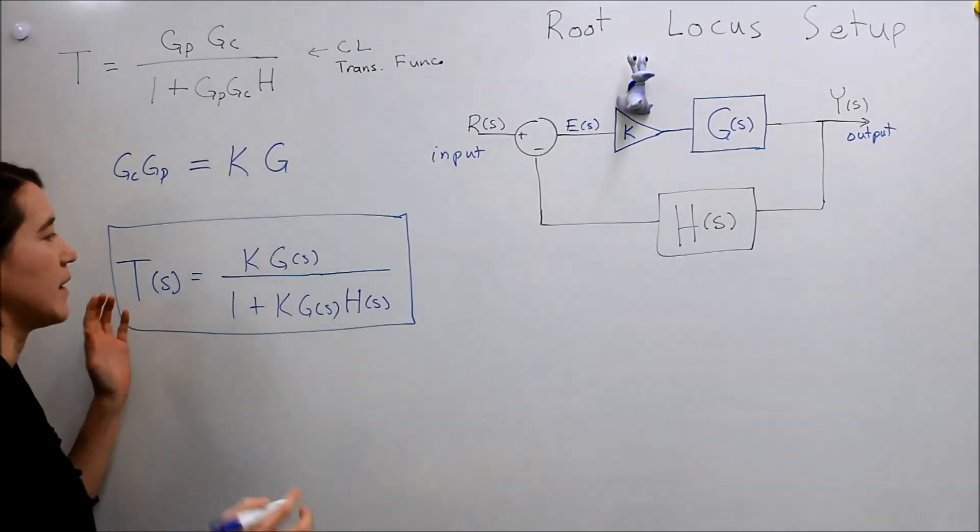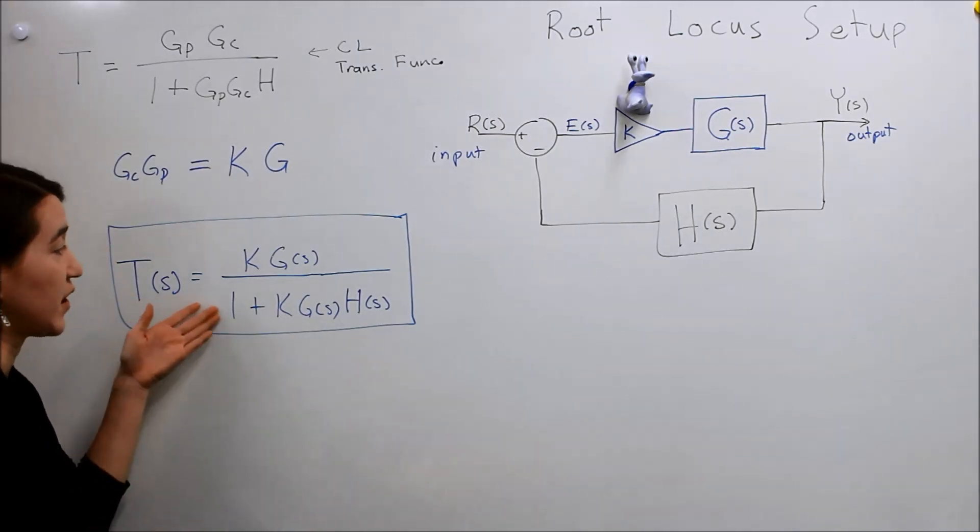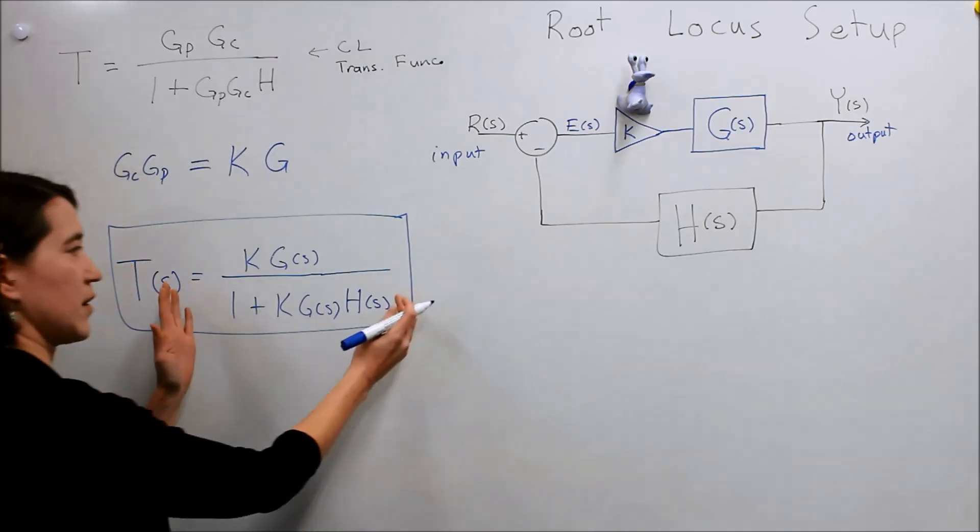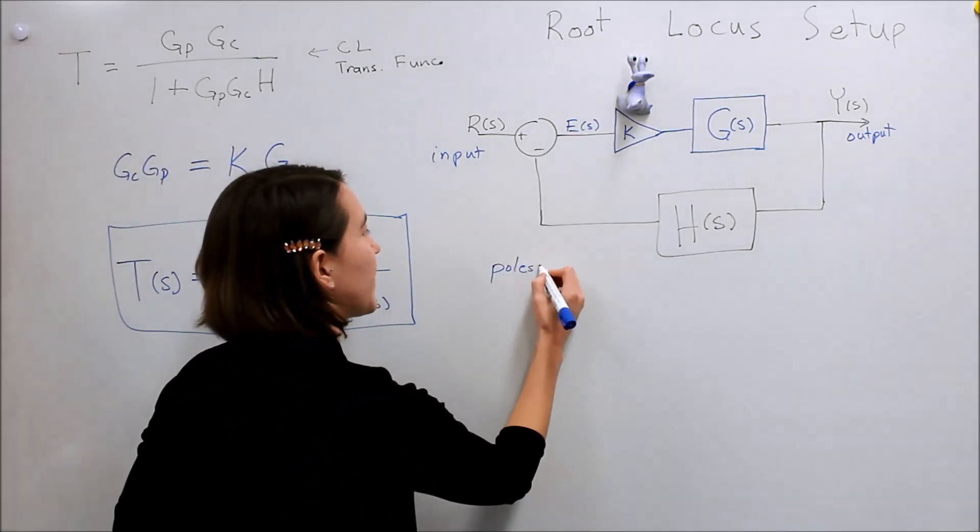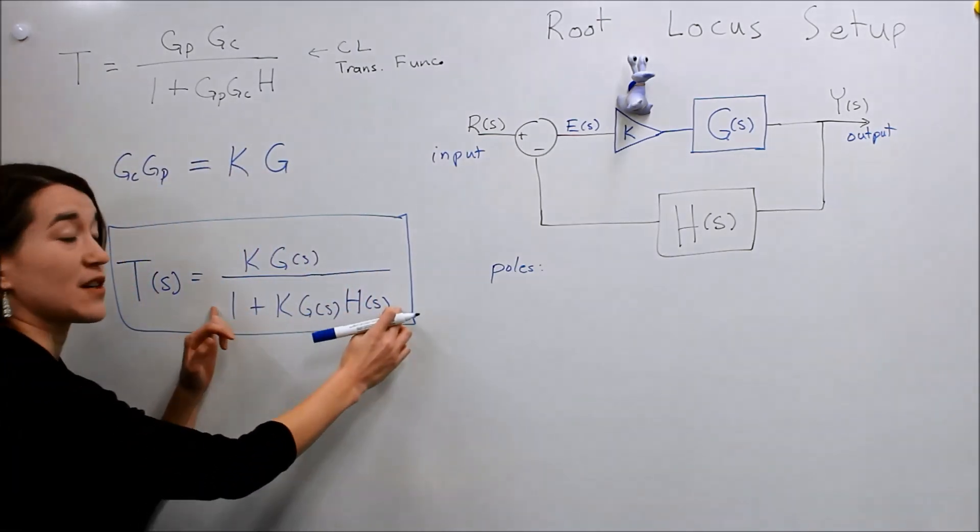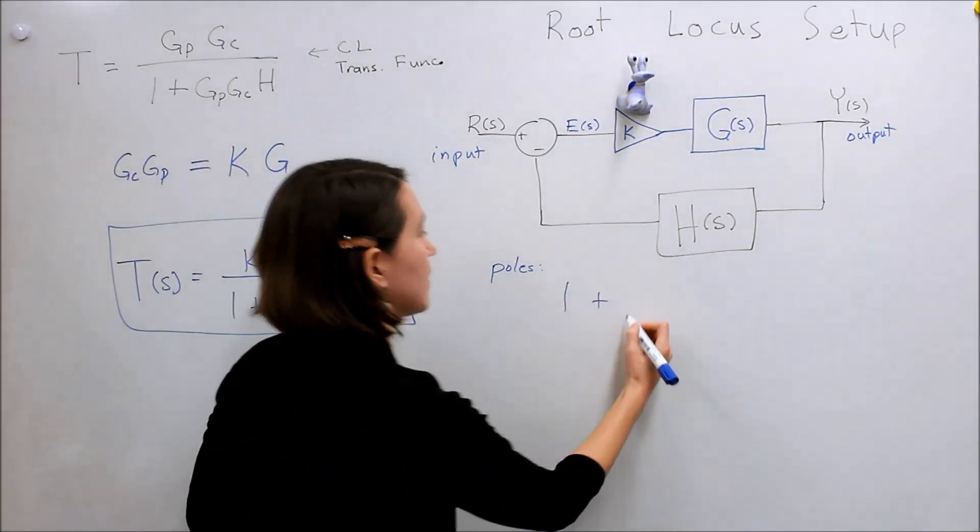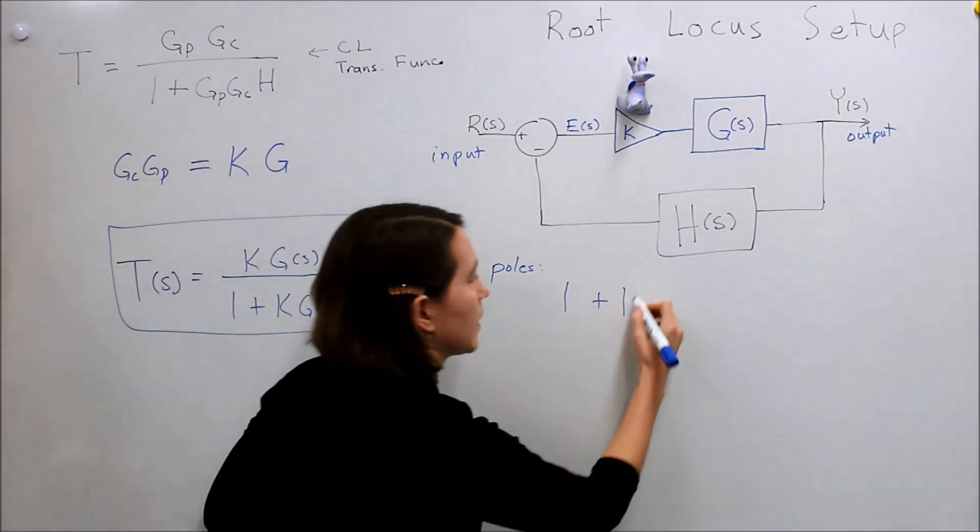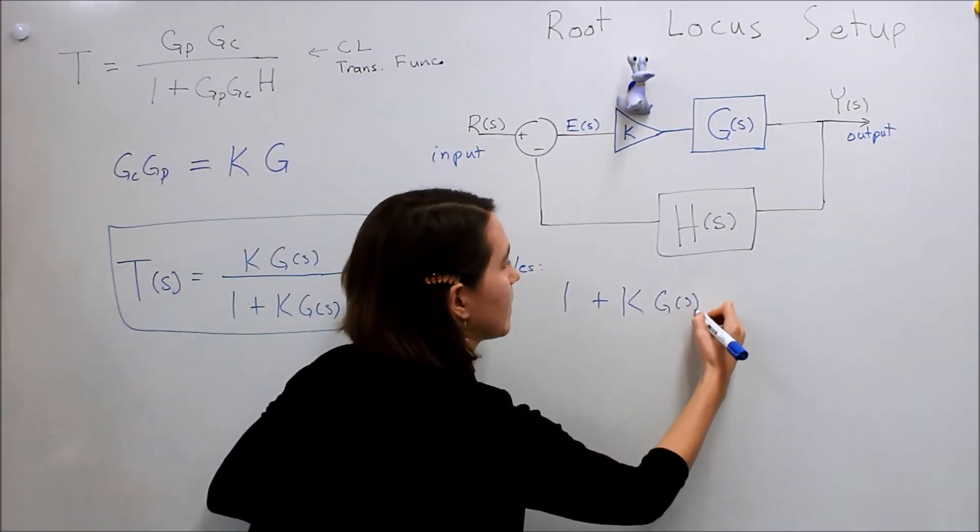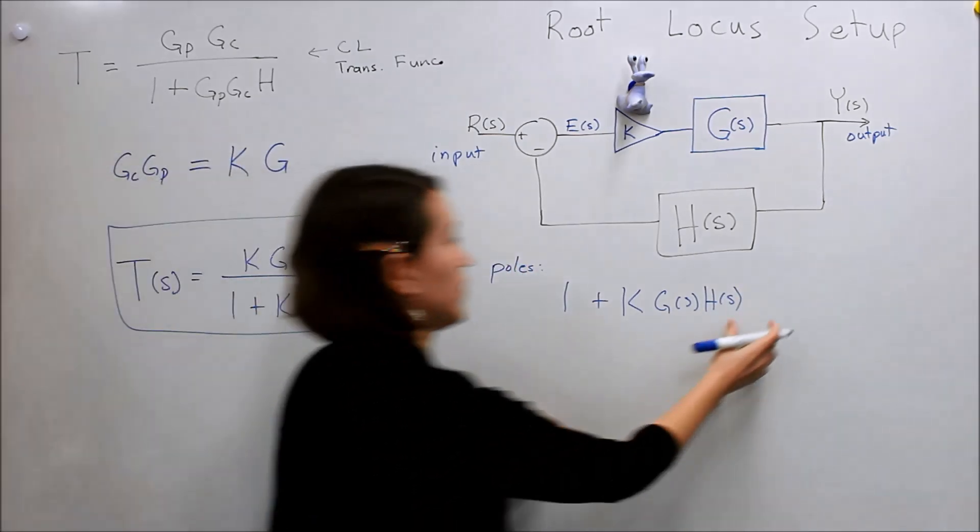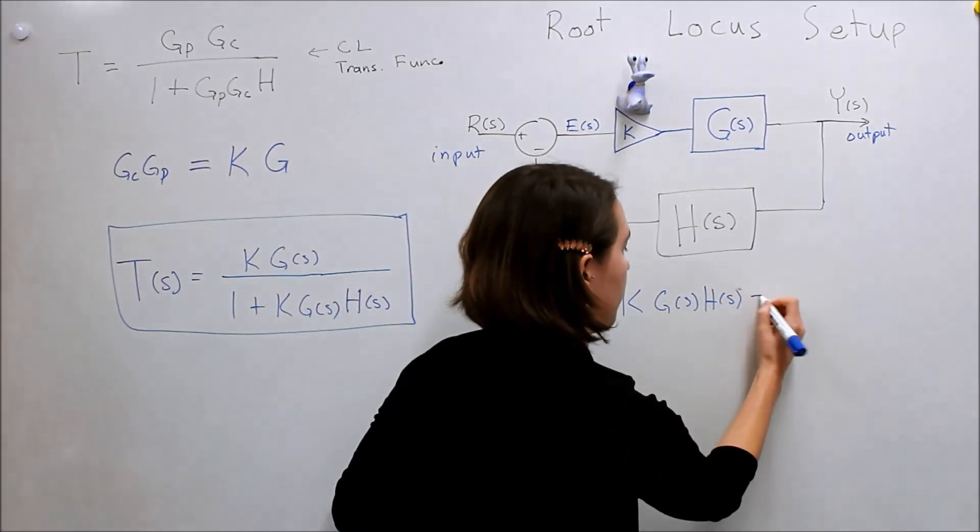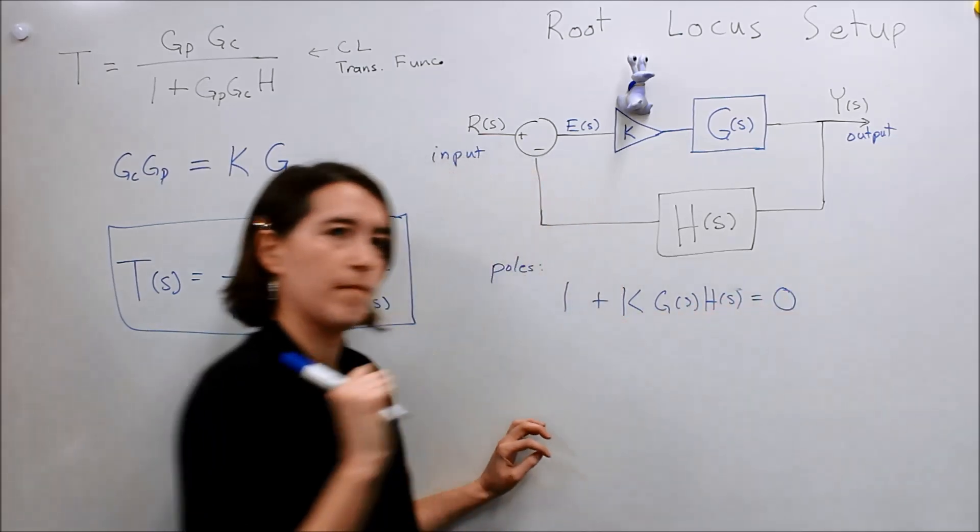Now to look at the stability of the system, we need to look at the poles. So we just look at the denominator here. So our poles, if you remember, are the values of S that make this expression zero. So we can also write that as one plus K times G of s, H of s is equal to zero.